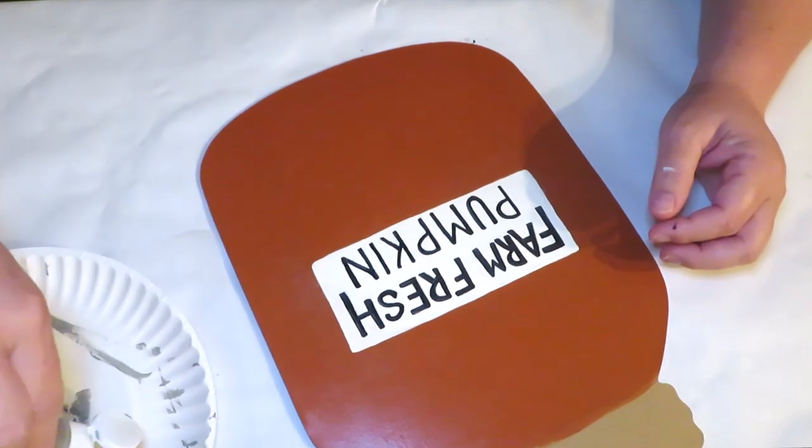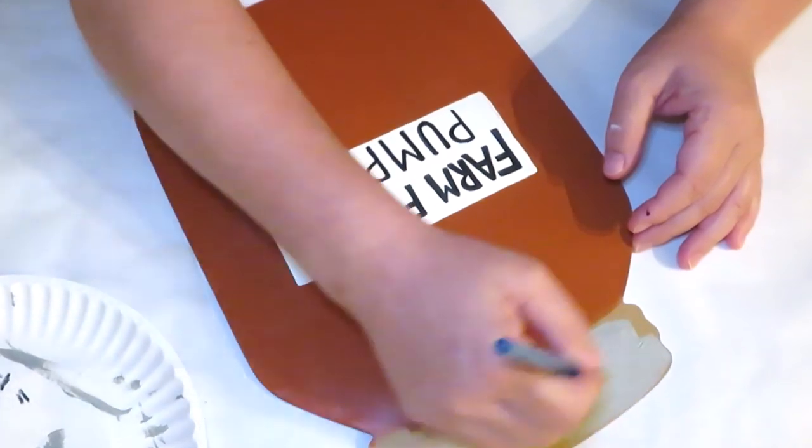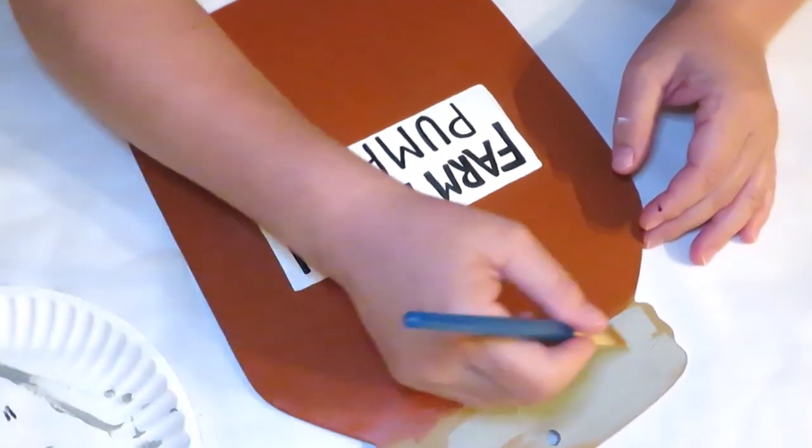Now on to our lid. For this, I used a little bit of gray paint right along the top in a couple of coats, letting it dry completely.